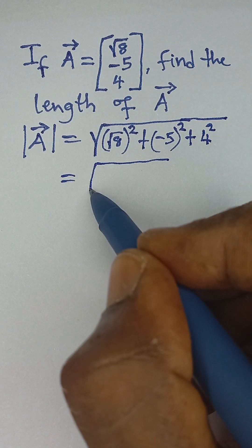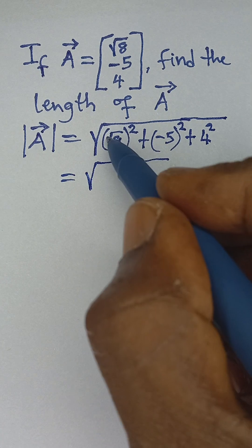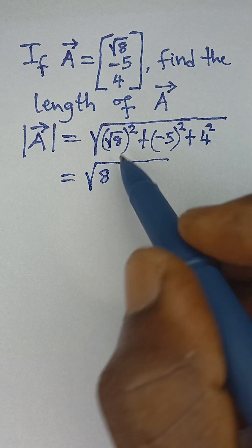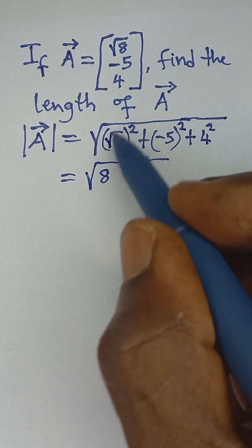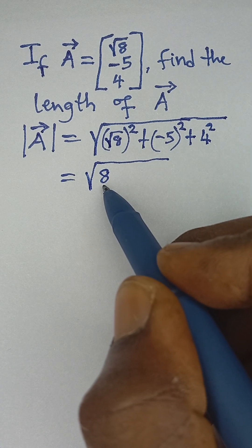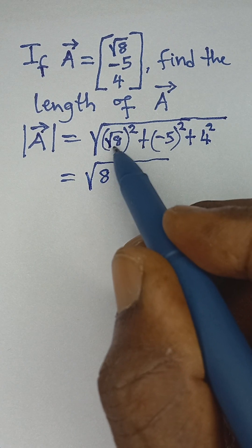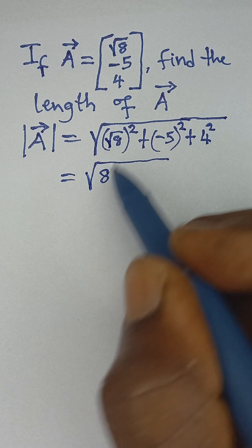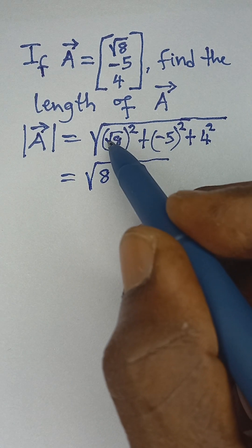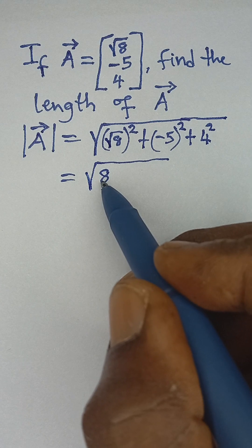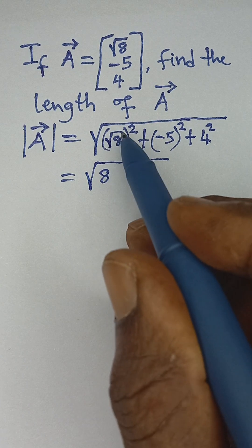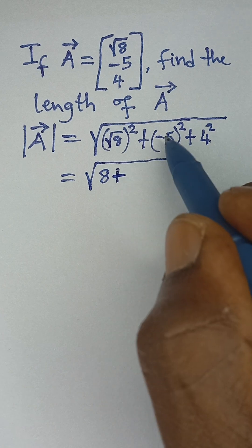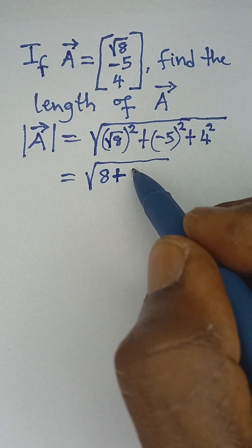We take the square root, and (√8)² simply gives us 8 — the square root sign is removed along with the square. So this is 8, because the square of √8 is 8. Then plus the square of negative 5, which gives 25.